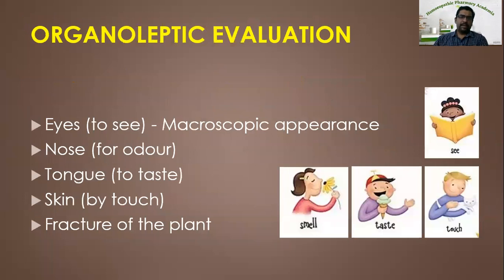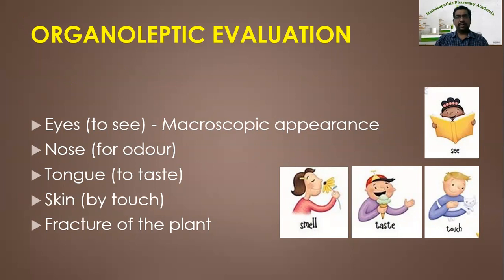The macroscopic appearance — that is the gross appearance of the drug substance — can be visualized by the analyst. Some drug substances have a strong odor which can be identified by smelling. Some may have a very characteristic taste. Some can be very soft or very hard and rough, and that can be identified by mere touch. For some, especially plant species, you can break it and see the fracture — the type of fracture helps in identification.